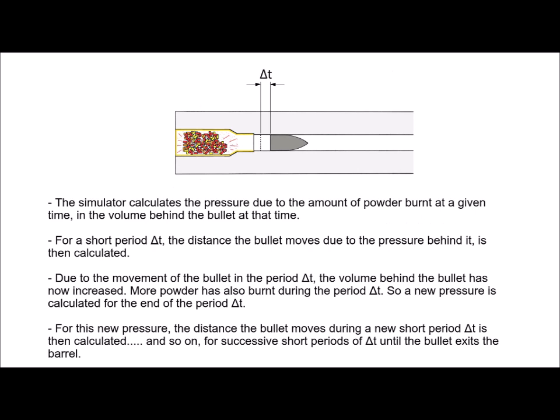The simulator calculates the pressure due to the amount of powder which is burnt at a given time, in the volume behind the bullet at that time. Then, for a short period delta T, the simulator calculates the distance the bullet moves due to the pressure behind it. Due to the movement of the bullet during that period delta T, the volume behind the bullet is now increased, and also more powder has burnt during that period delta T. So the simulator calculates a new pressure at the end of that period delta T. Then for this new pressure, the simulator calculates the distance that the bullet moves for a new short period delta T. This carries on for successive short periods of delta T until the bullet exits the barrel.